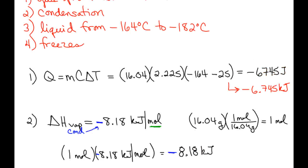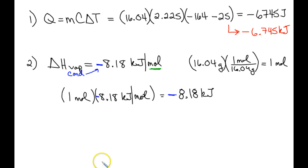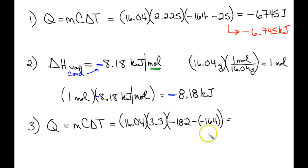Our next step is we are going to continue to cool our now liquid methane from negative 164 to negative 182. So this is going to be another Q equals mcΔT, 16.04 grams times specific heat capacity for liquid methane is 3.3 joules per gram degree Celsius. And our final temperature is negative 182 minus the initial, which is negative 164. And as you would expect, you should get a negative number, negative 952.8 joules. And we're going to go ahead and convert that to negative 0.9528 kilojoules.